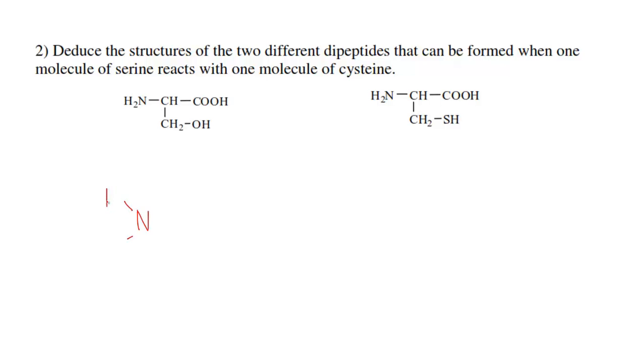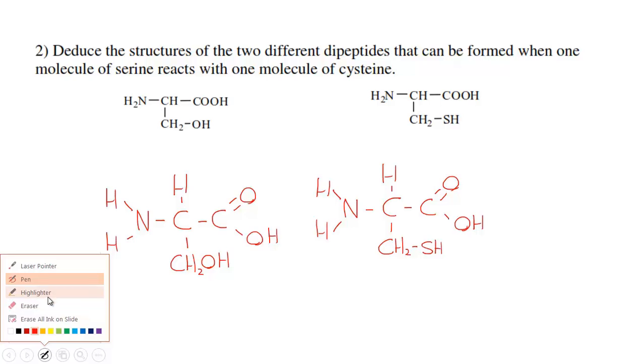I'm going to show you now how to draw a dipeptide formed from the two amino acids serine and cysteine. I'm going to draw the structures of them first and then I'll show you how they bond and I'll identify the peptide bond.